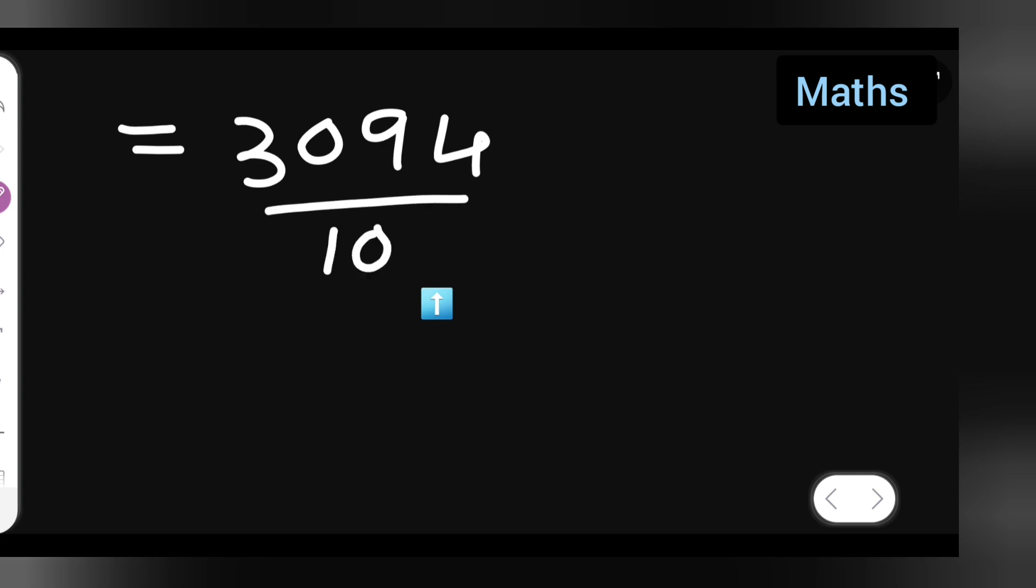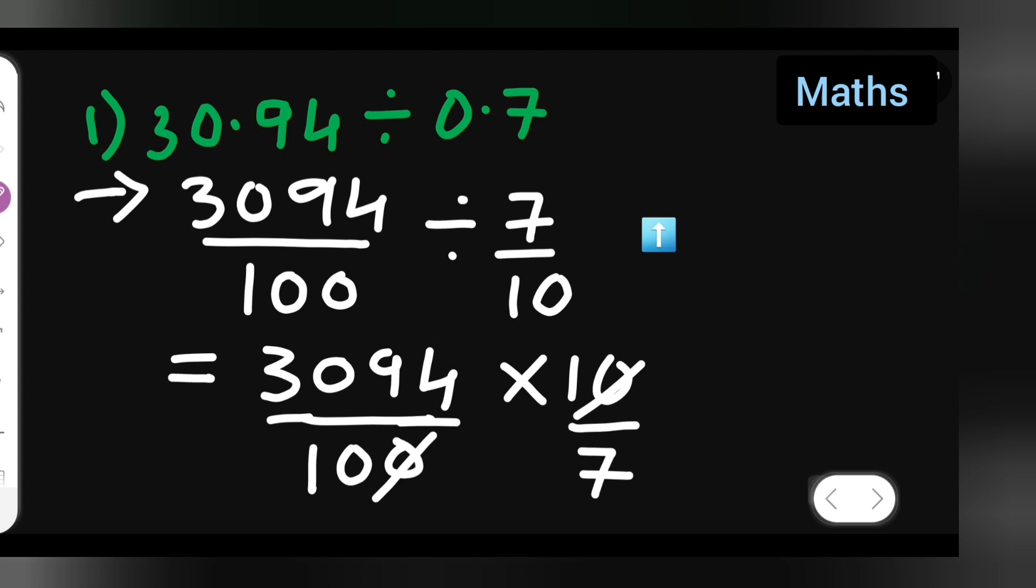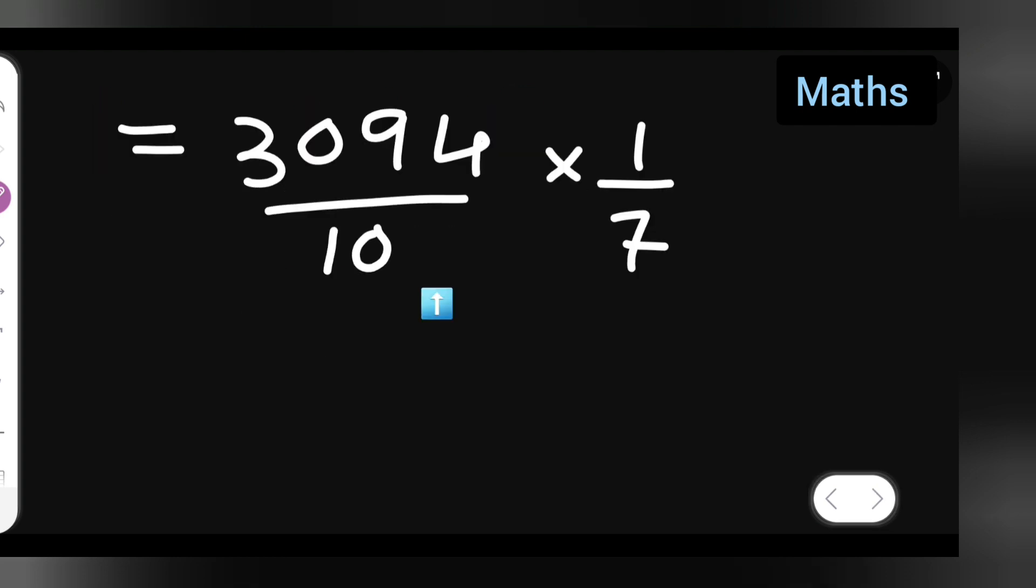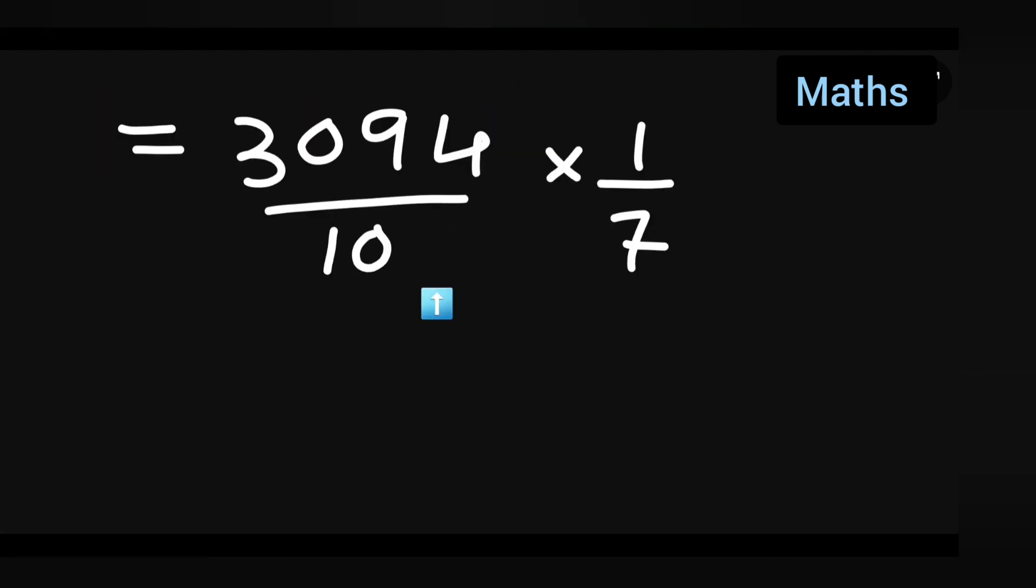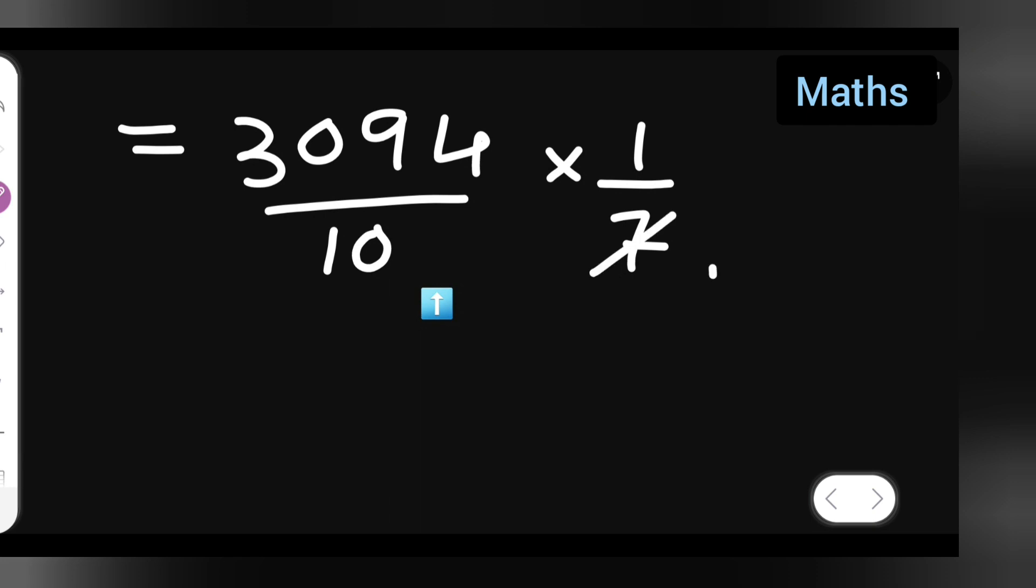7 ones are 7. 7 fours are 28, carry 2. Then 7 fours are 28 again, carry 1. 7 twos are 14. So your answer is 442 upon 10.